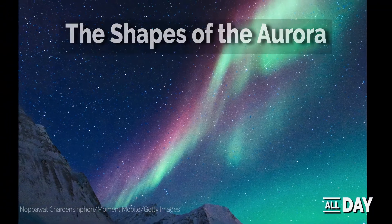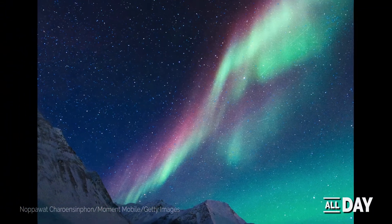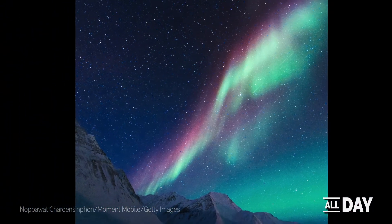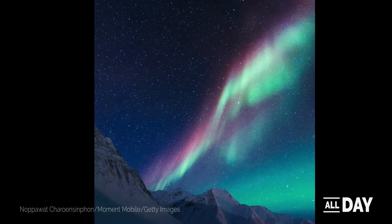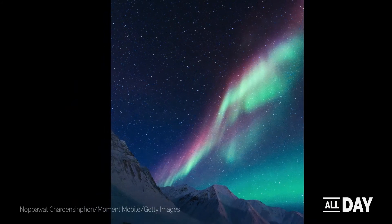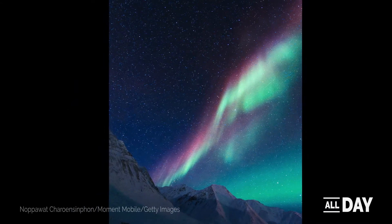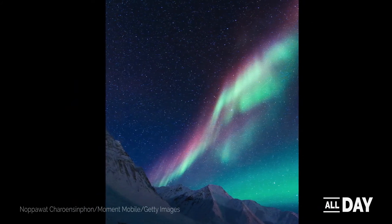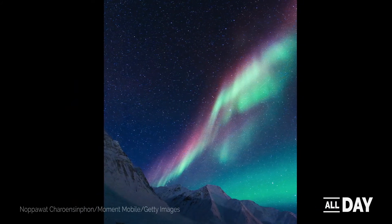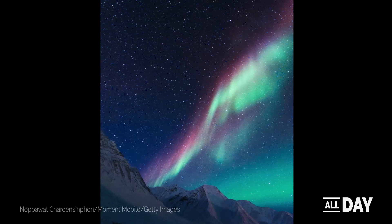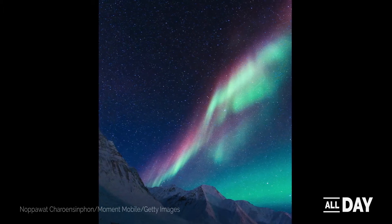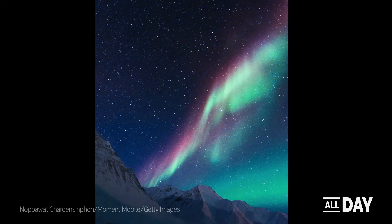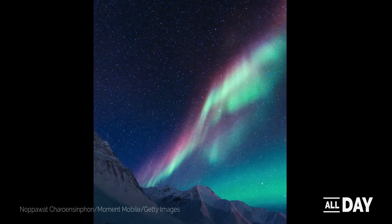The charged particles that hit the atmosphere move in spirals along the magnetic field lines of the Earth. The particles enter the atmospheric gases in a ring around the magnetic poles, giving the excited gases their long ribbon-like shape.